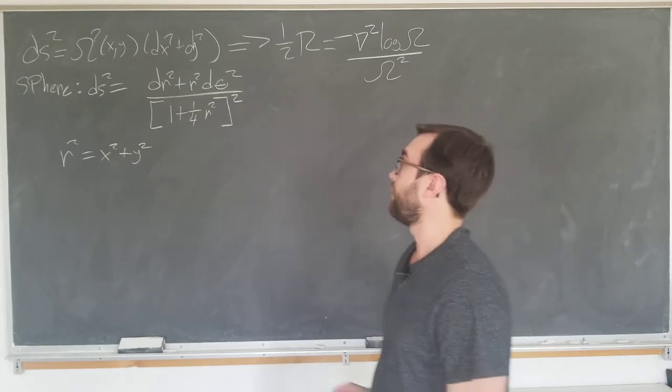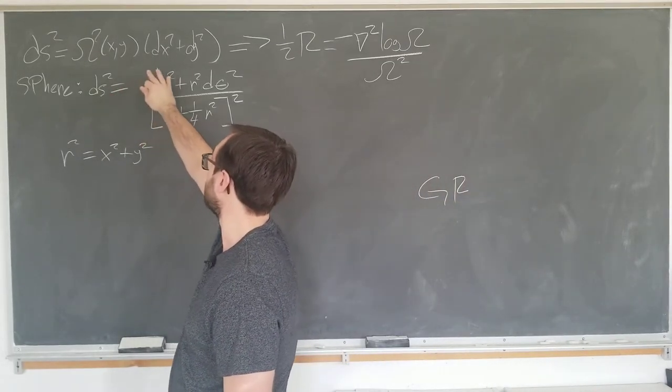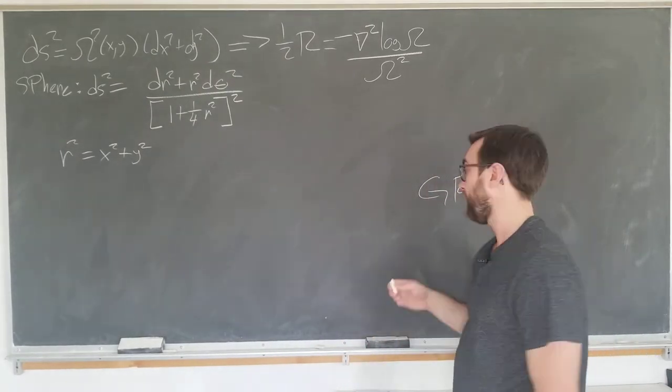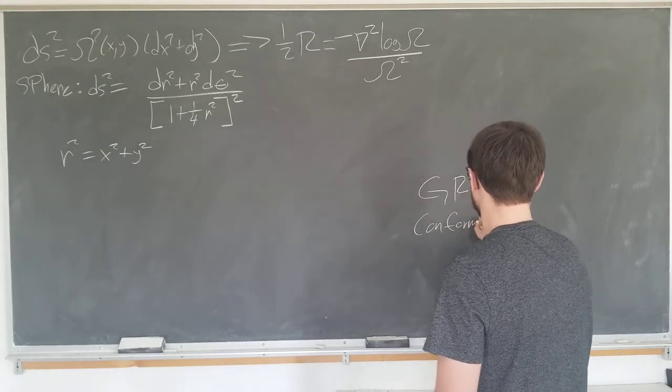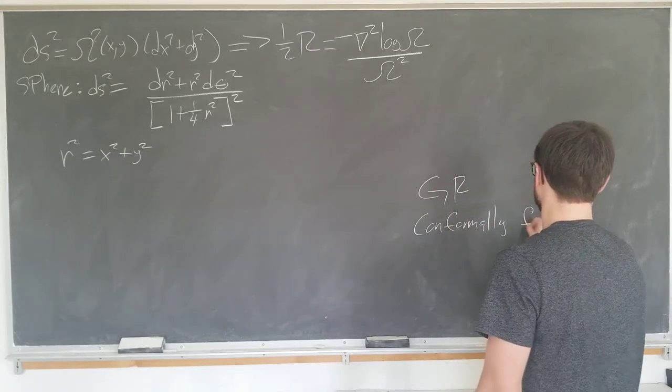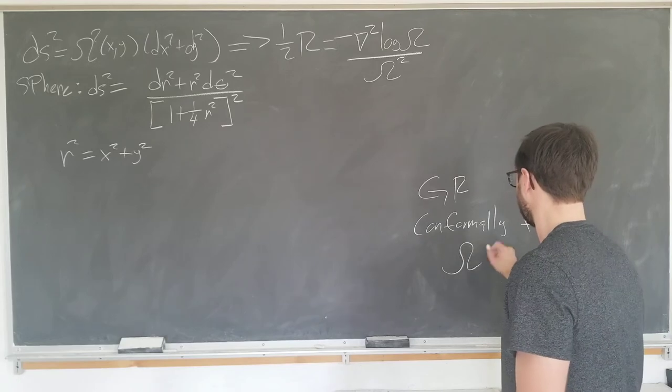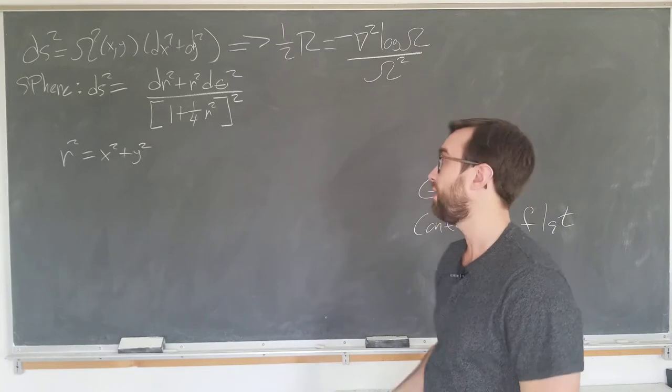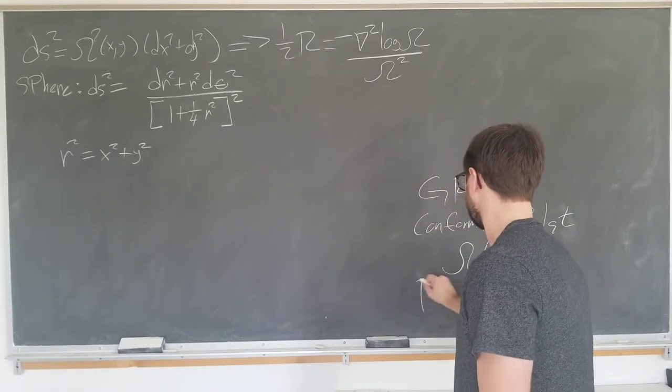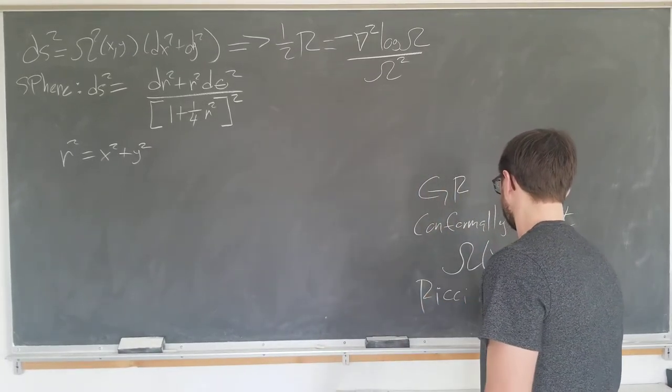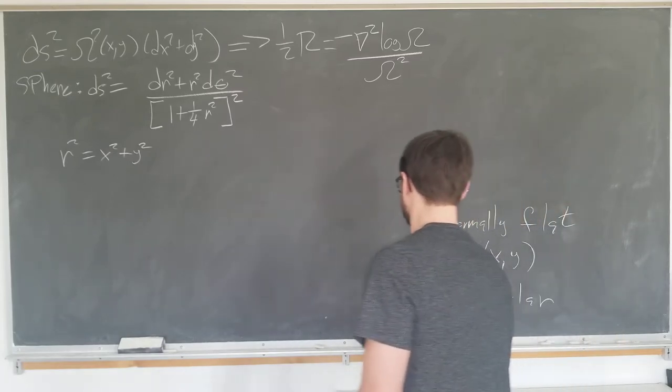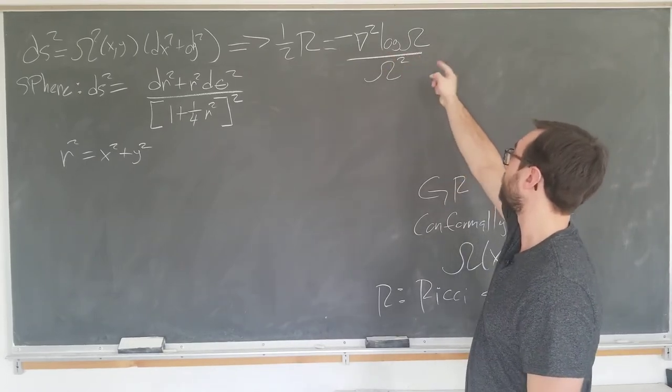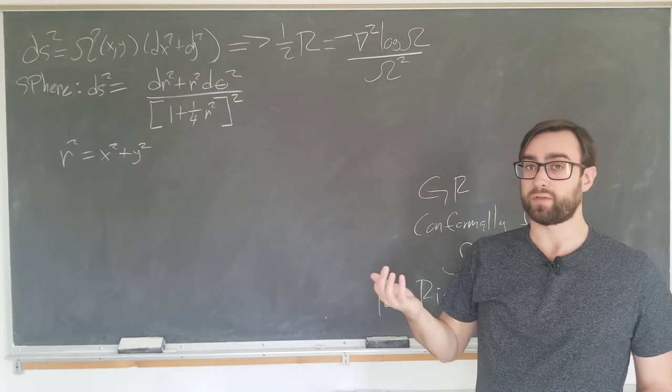It says if we write the metric in terms of a function squared times the flat metric, or in a conformally flat form, with the conformal function being omega of x and y squared, then half of the important curvature constant, the Ricci scalar, is actually going to be minus the Laplacian of the log of the conformal function over the square of it.